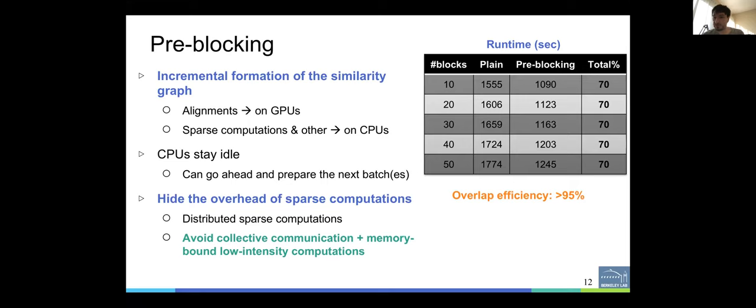We perform the alignments on the GPUs, so we delegate the alignments on the GPUs, and those high memory footprint and those irregular computations related to sparse computations, we perform those on the CPUs. In incremental formation of the graph, the CPU has to prepare the candidate pairs which are aligned, and then it sends them to the GPU, which performs those alignments, and then copies back to the host side, and then post-processes them to incrementally form the similarity graph. In this way, if done manually, the CPUs can stay idle, but this block formation allows us, allows the CPUs to go ahead and prepare the next batches while the GPUs are usually performing the current batch. In this way, we can hide the overhead of the sparse computations, and these are distributed sparse matrix computations with all the collective communications and the irregular memory accesses, so avoiding those types of operations are really useful, because sparse computations do not really scale well as opposed to those alignments that usually scale really well.